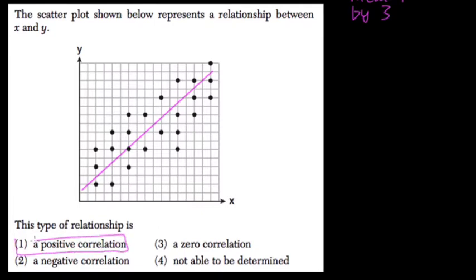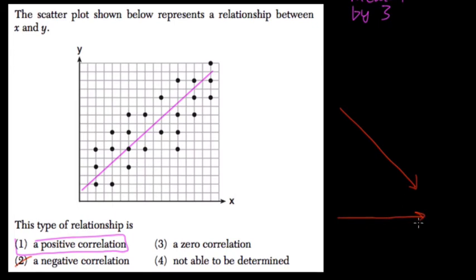A negative correlation — the line would be doing the opposite thing. It would be going down as x is increasing. But it's not that one. A zero correlation would be a flat line. And 'not determined' would be a vertical line going straight up and down.